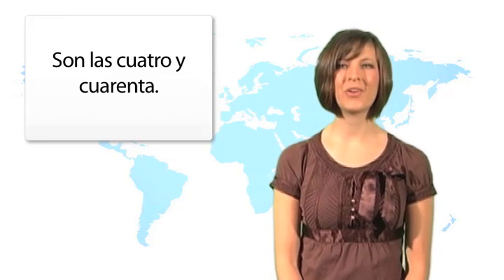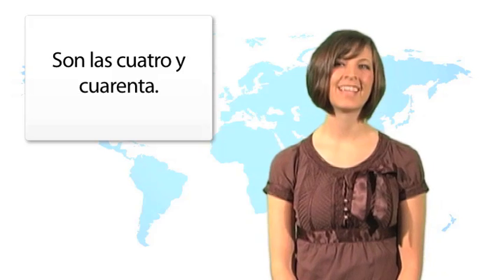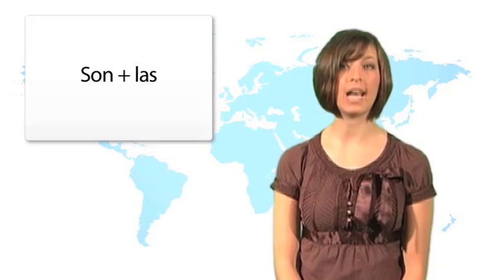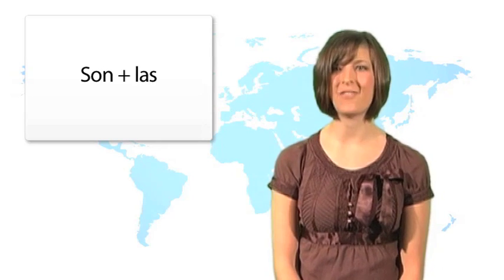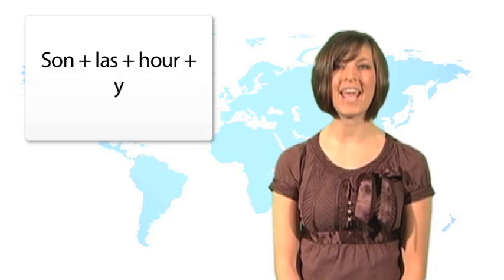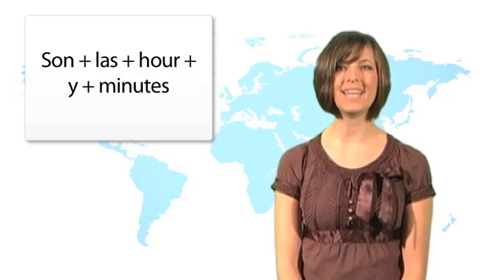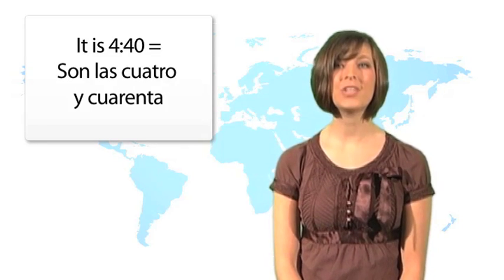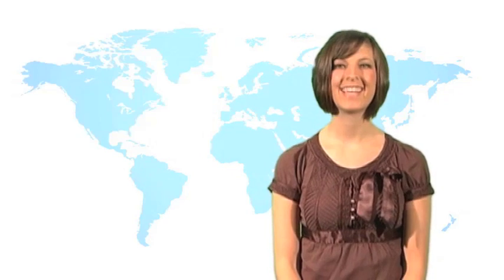Pues, son las cuatro y cuarenta. Did you notice how I answered with the time? It's a little bit different than in English, right? In Spanish, you say son, which is the plural form of ser, and then las, which is the plural, feminine, definite article, and then the number for the hour. Right now, the hour is four, so you would say cuatro, and then you use our word for and, y, and then the number of minutes. Cuarenta, forty. It's four forty. Son las cuatro y cuarenta. Te toca, it's your turn. ¿Qué hora es?